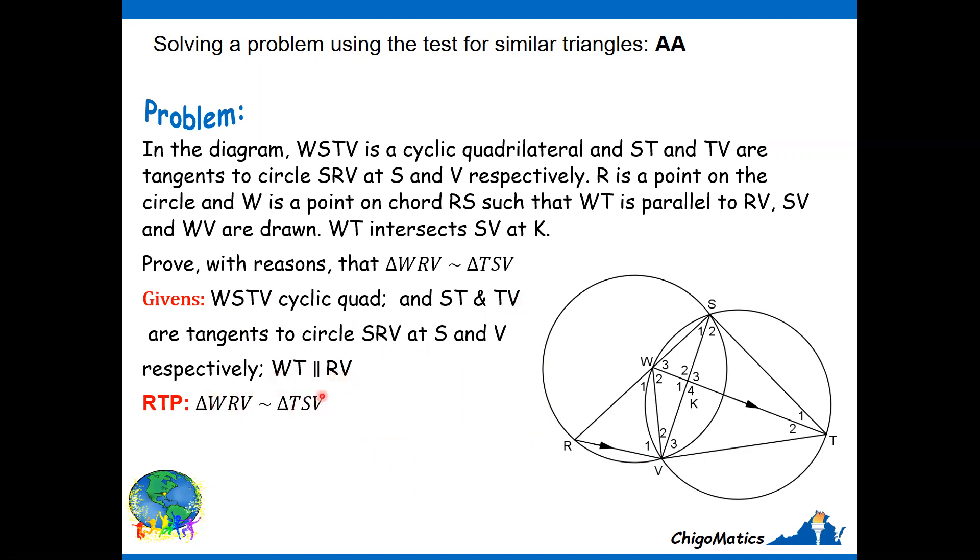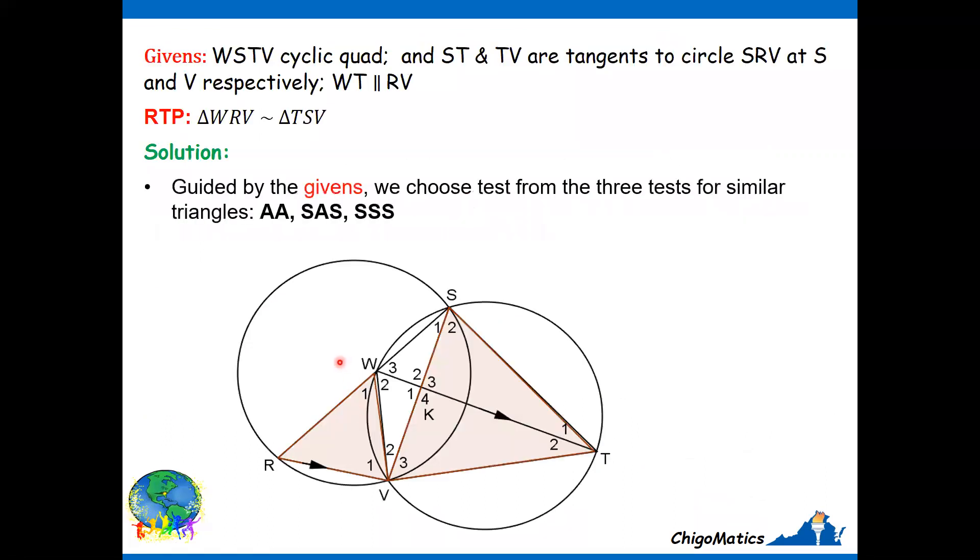Guided by the given, we choose tests from the three tests for similar triangles. These are the three tests we can use to show that two given triangles are similar. From the information we are given, there is a cyclic quad and two lines are parallel.